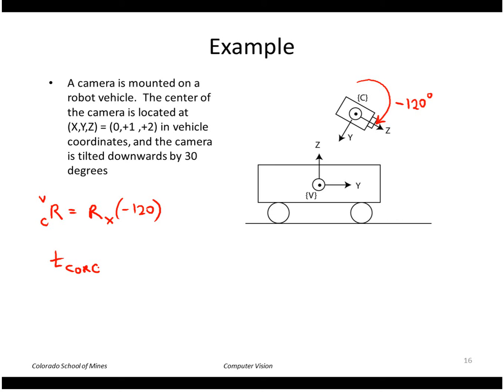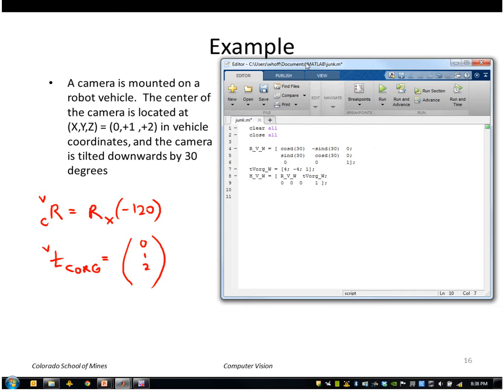And then the amount of rotation is, if I started with the world z pointing up, it actually rotates minus 120 degrees. The origin of the camera with respect to the vehicle is 0, 1, 2. So let me go ahead and put that into the MATLAB script. So the rotation matrix about the x-axis is going to be given by cosine of minus 120, minus sine of minus 120,